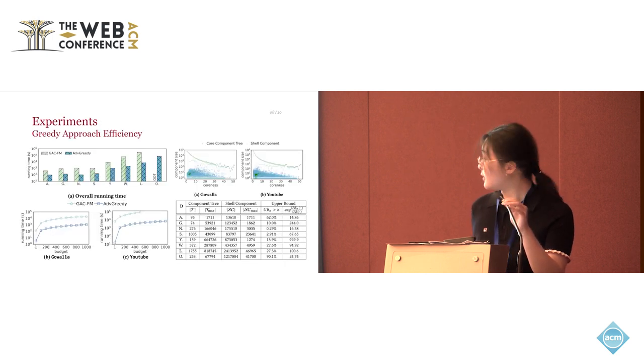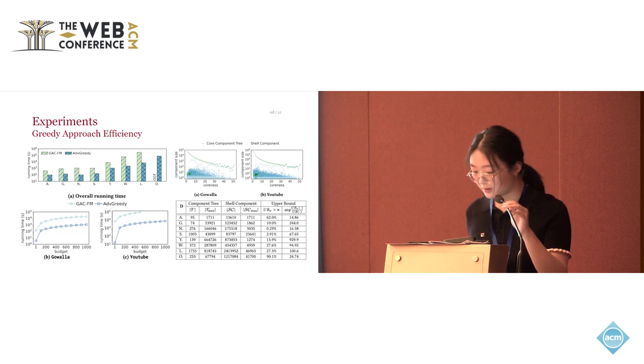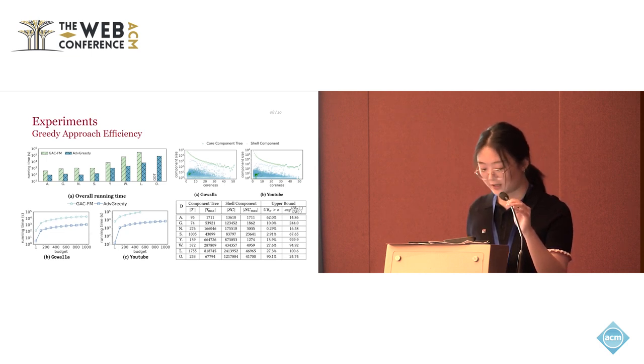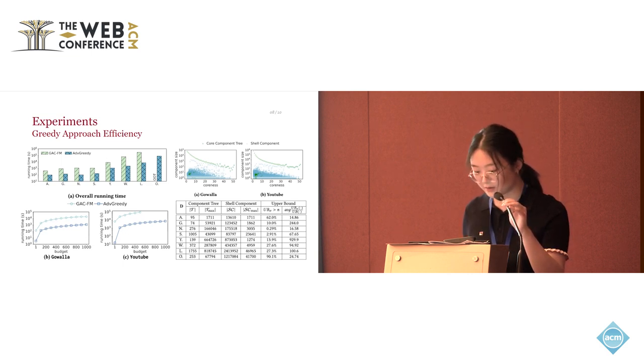This is the experiments to evaluate the efficiency of our greedy approach. We can see that our greedy approach outperforms the baseline GACFM by almost one order of magnitude and up to two orders. The gap becomes larger with the scale of the datasets increasing. The figures and the table on the right shows two techniques we adopted in our ADV greedy. They are the main reason why our approach outperforms the baseline GACFM approach.